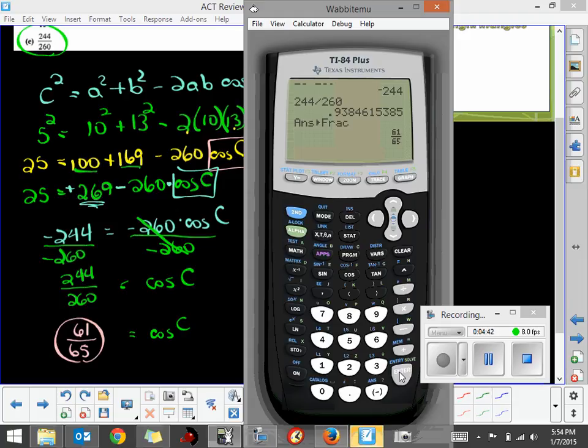Many times they'll get it down in lowest terms, but this one did not. We can stop here at 244 over 260.